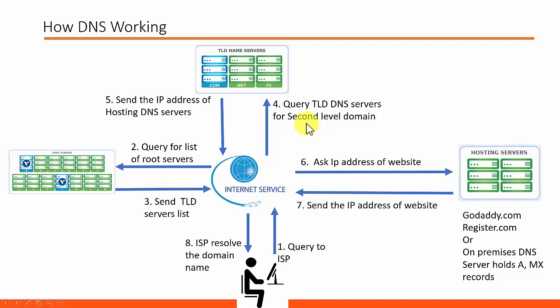Step 4: the local DNS server will send a query for the second level domain name server to the TLD server. In our case, itproguide.com — so itproguide is a second level domain. The local DNS will send a query to the TLD servers for the second level domain name server. In step 5, the local DNS server will receive the IP address of the hosting server. For example, itproguide is hosted in Wix DNS, so in this case the TLD name server will send the IP address of Wix name servers.